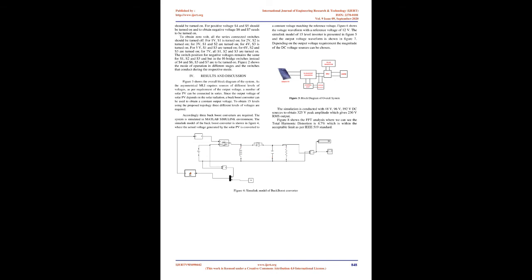The proposed 15-level inverter, shown in Figure 1, is a combination of 3 series connected switches with the DC sources, with each switch combination having a diode connected in parallel. Diodes not only reduce the stress on the switch but also provide a path for current flow when the switch is turned off. There is a cascaded H-bridge combination connected with series connected switches. The pulses to the cascaded cell are given directly through the pulse generator, and the pulses to the MOSFETs are given as input pulses from the output of the PWM generation circuit.